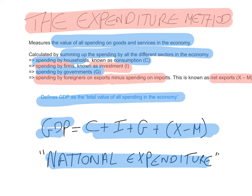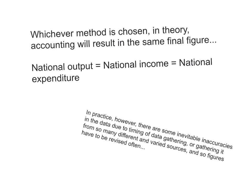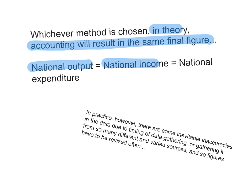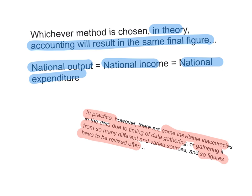National expenditure should equal national income, which should equal national output. Whichever method is chosen, in theory, accounting will result in the same final figure. However, in practice, there are some inevitable inaccuracies in the data due to the timing of data gathering, or gathering it from many different and varied sources, so the figures often have to be revised.